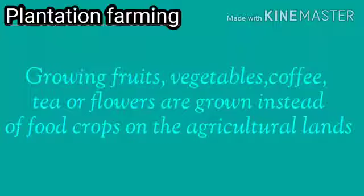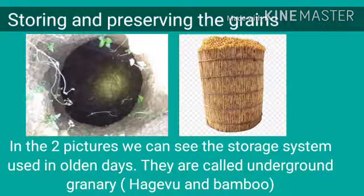Next, plantation farming. Growing fruits, vegetables, coffee, tea or flowers instead of food crops on agricultural land is called plantation farming.